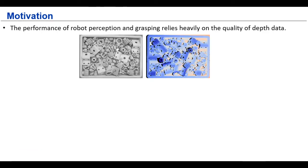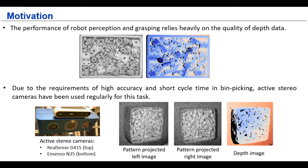For the bin picking problem, both object pose estimation and path planning heavily rely on the depth data quality. And because of requirements of high accuracy and short cycle time in robotic bin picking, Active Stereo cameras, such as Ensenso and RealSense camera, have been used regularly for this task.